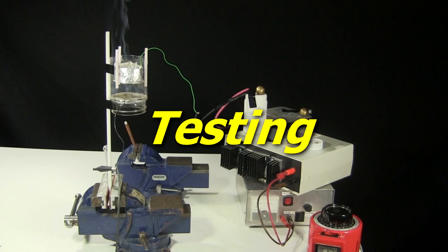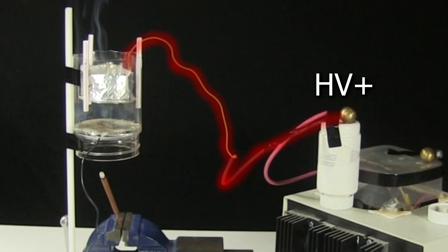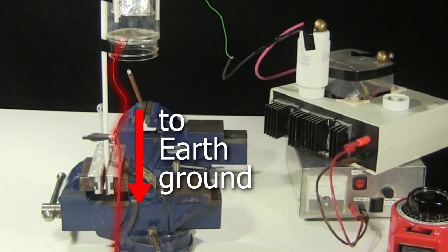Time to test it. For the high voltage I'm using my high voltage power supply. The cylinder is connected to high voltage positive. The mesh is connected to a wire going to earth ground, which will be charged negatively due to its interaction with the positive cylinder.